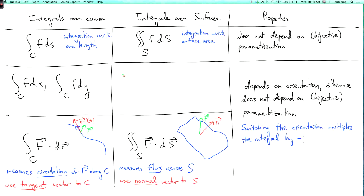There's one missing box here, and this actually can be filled in. There are integrals over an oriented surface of f dx dy, f dx dz, and f dy dz. The definition of these is beyond the scope of this course, but you should be aware that these exist.